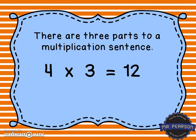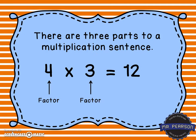There are three parts to a multiplication sentence. Looking at the multiplication sentence 4 times 3 equals 12: the first number, the 4, is what we call a factor. The second number is also called a factor — that 3 is a factor. And then the 12, which is our answer, is known as the product.